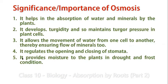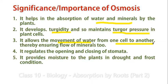What is the importance of osmosis to plants? By this process, plants absorb water and minerals. As water enters the cells, turgidity is caused — the cells swell up, become tight, and build turgor pressure in the plant cells. Thirdly, it allows cell-to-cell movement of water, and minerals also move along with the water. It regulates the opening and closing of stomata, and helps plants absorb moisture during drought and frost conditions.